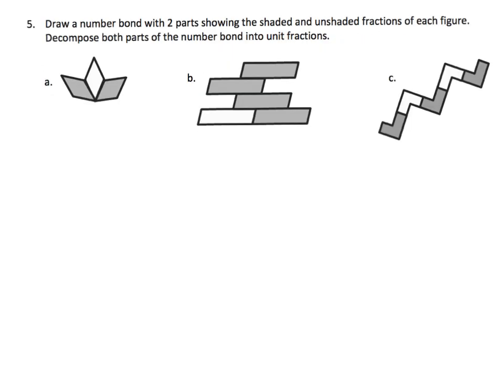This one says, draw a number bond with two parts showing the shaded and unshaded fraction for each figure. And then it says, decompose both parts of the number bond into unit fractions. That's the extra step that looks a little bit different. Let's just do problem B.